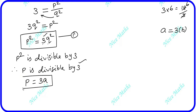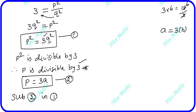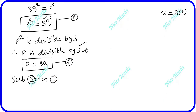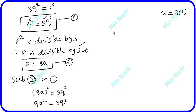Let p equal 3a. Substituting this into equation one — p² equals 3q² — we get 3a whole squared equals 3q², which is 9a² equals 3q². Dividing both sides by 3, we get 3a² equal to q².